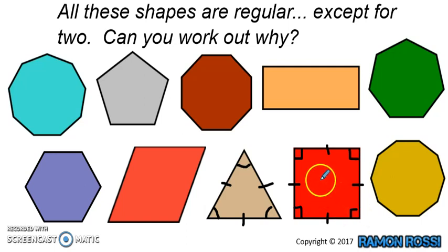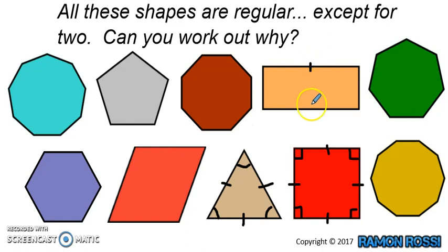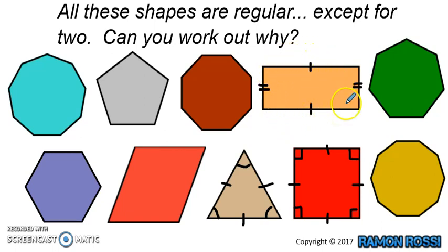The two irregular shapes are the rectangle and the rhombus. The rectangle has this side and this side the same, and this side and this side the same, but they're not all the same length. Even though the angles on the inside are all right angles, the sides are different lengths — so it's irregular.